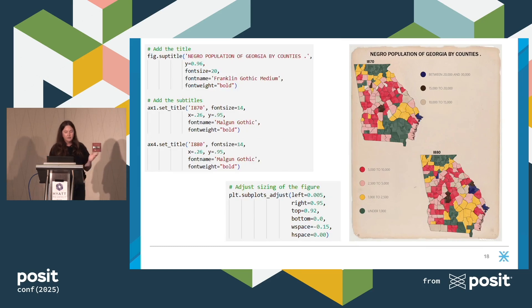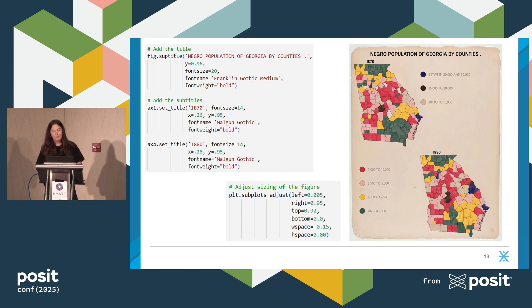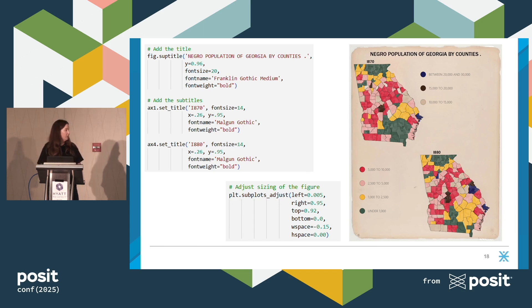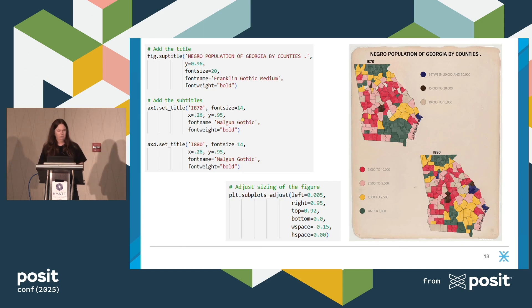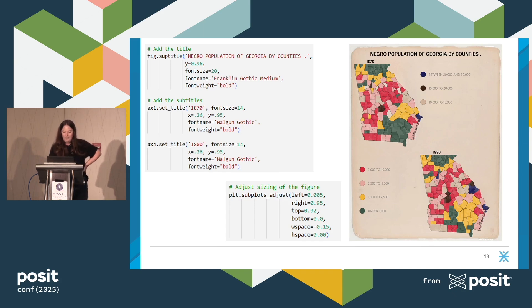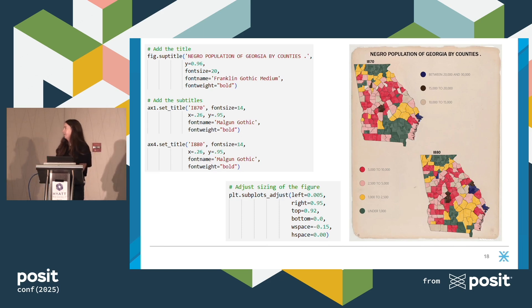For finishing touches, we add the overall figure title in the first line of code. We set the position of the title manually — Y equals 96% means put the title almost at the very top of the page — and set font specifications. Similarly for subplot titles, we set those manually using X and Y coordinates. A neat trick a team member implemented was using capital I instead of the number one to better match the original visual. At the bottom, we further specify the subplot dimensions. That's it for Python.